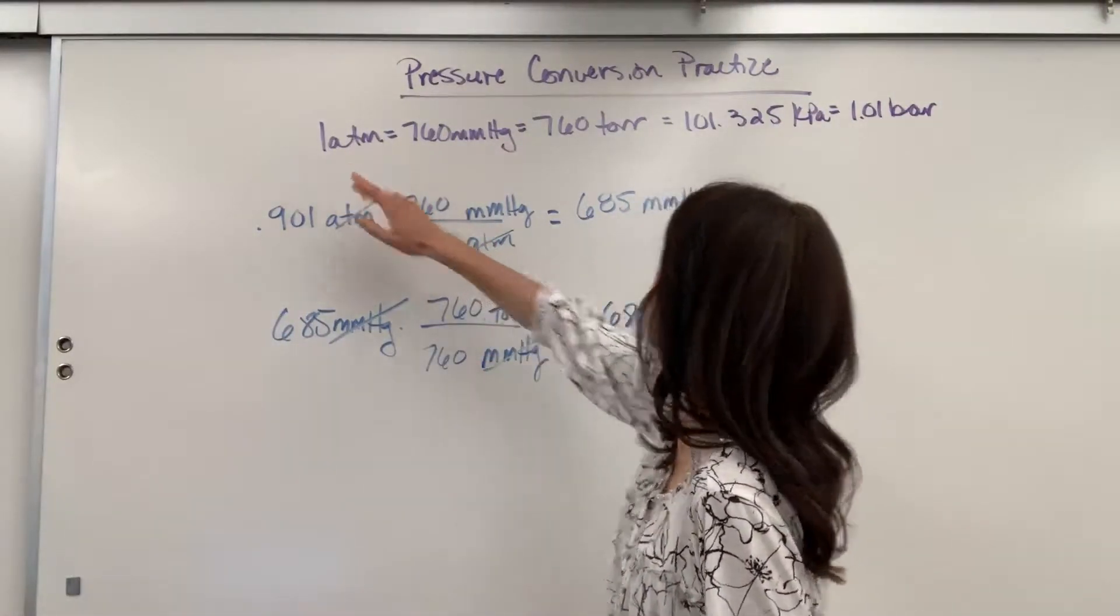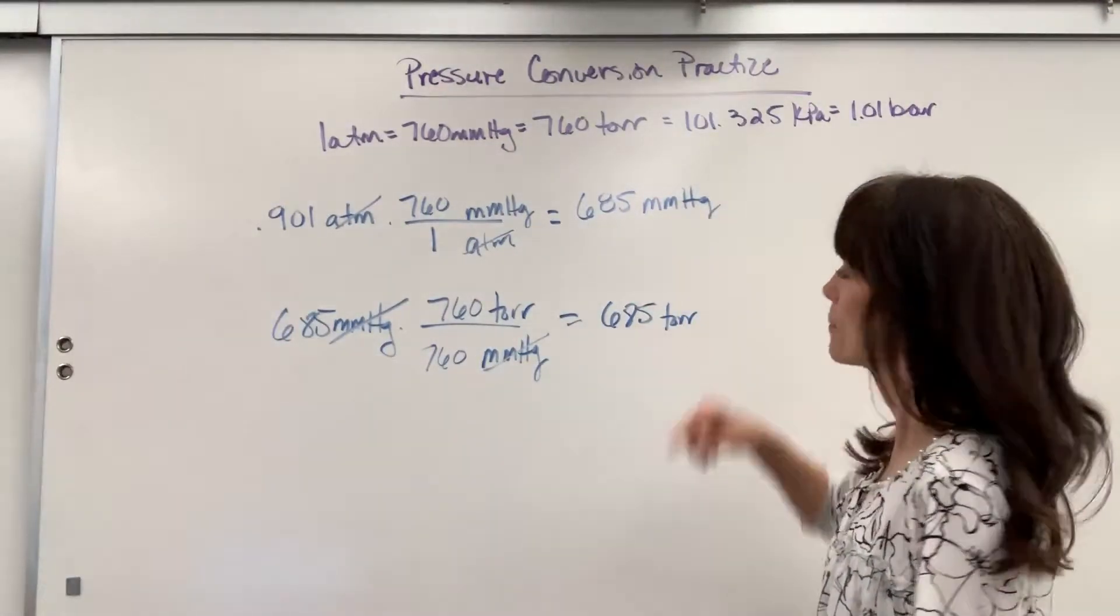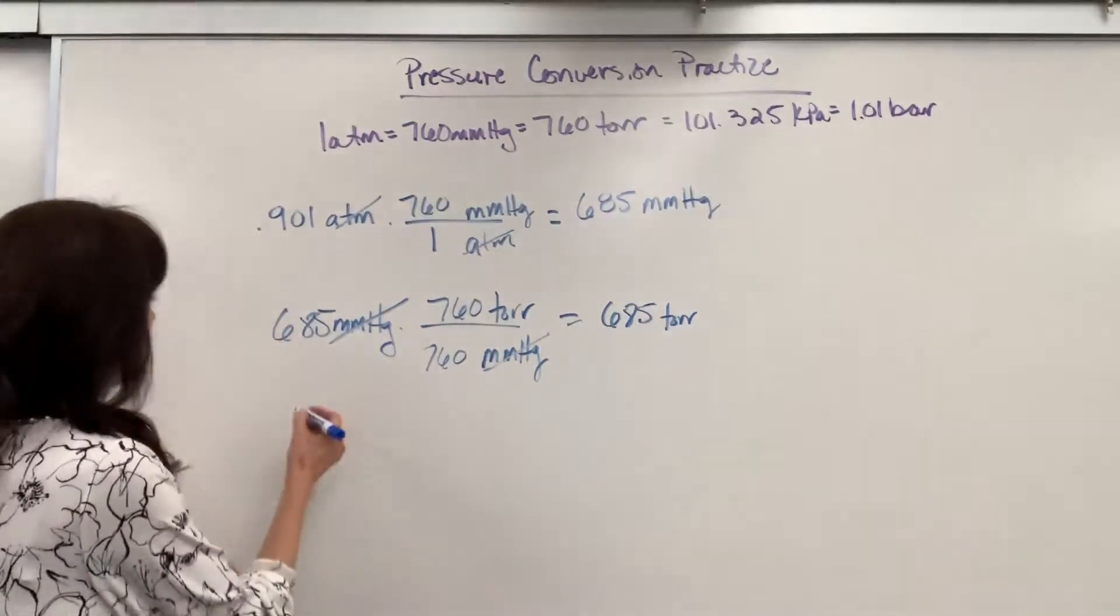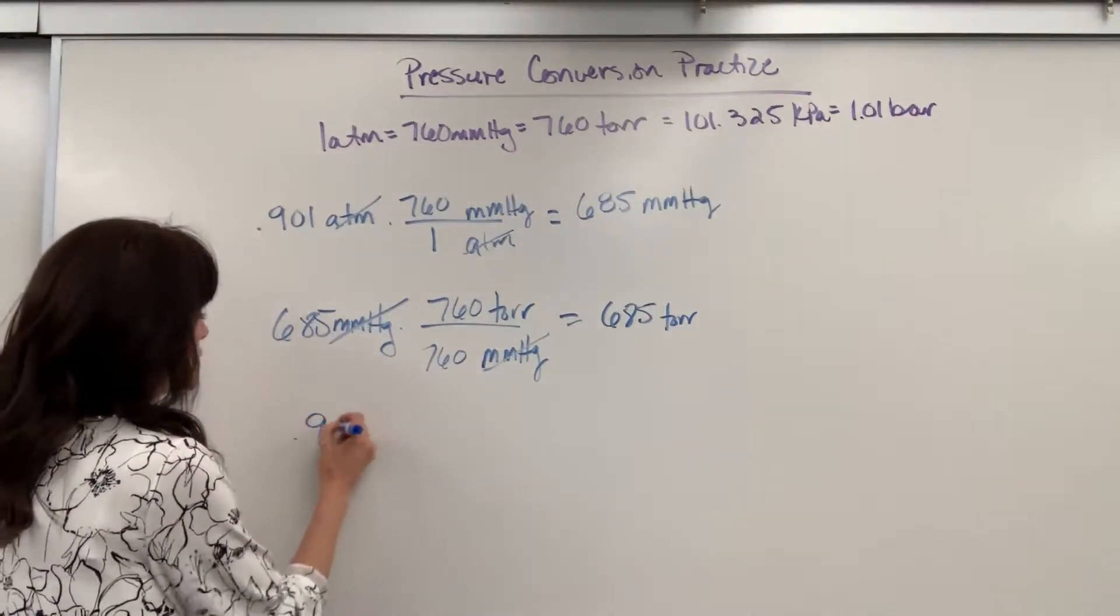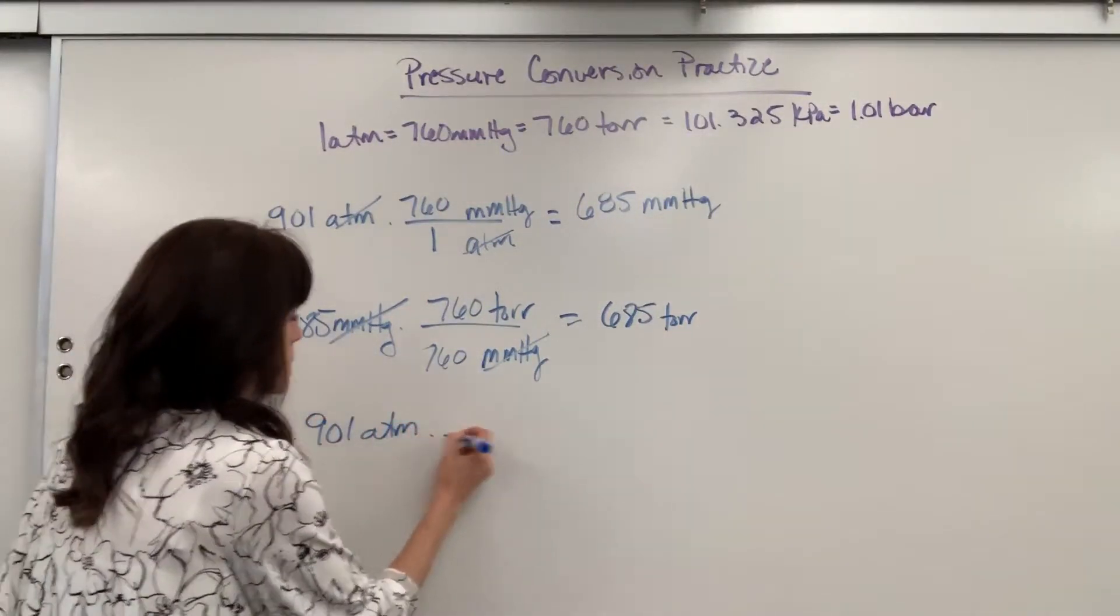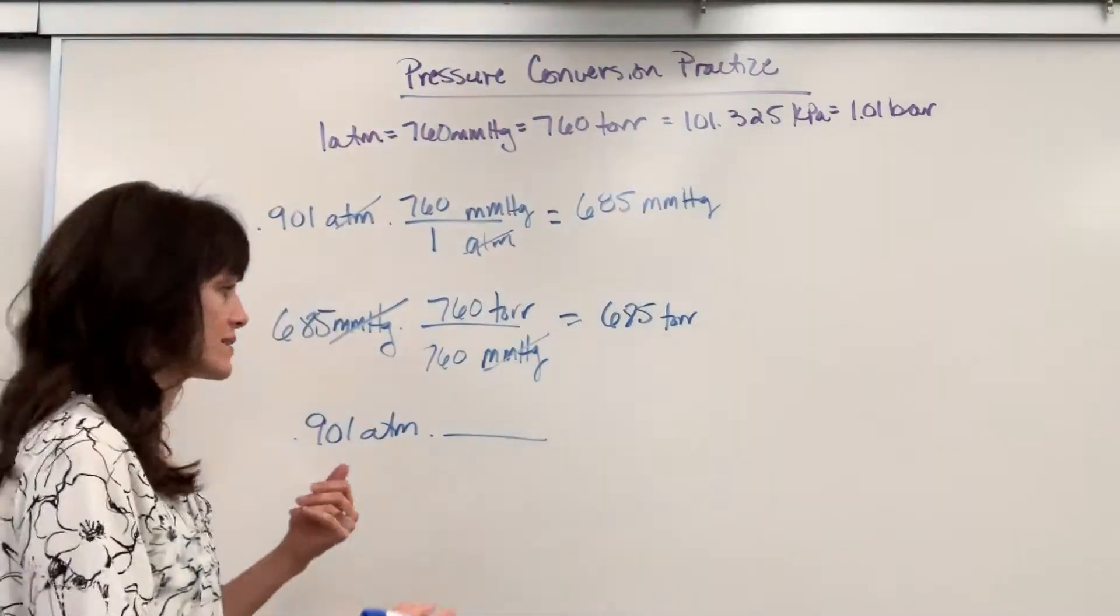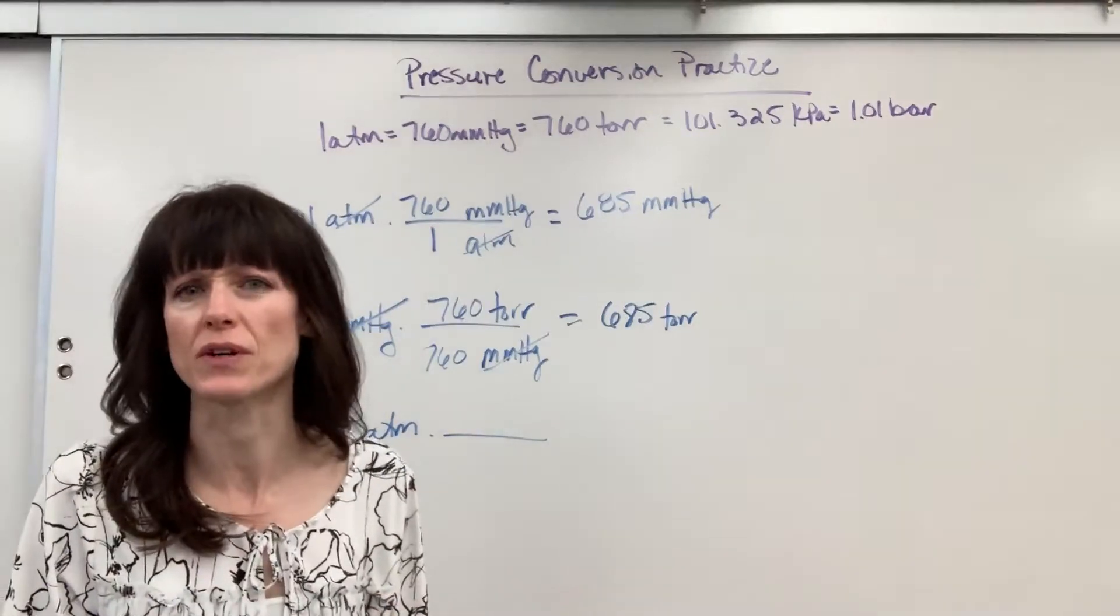Let's go from ATM to kilopascals. Remember, kilopascals, that's our SI base unit. So if I have the 0.901 ATM, I want to get rid of ATM and end with kilopascals. So you're thinking, where do you put the units? Always do the units first.